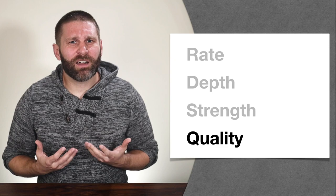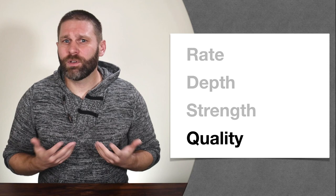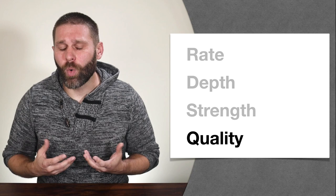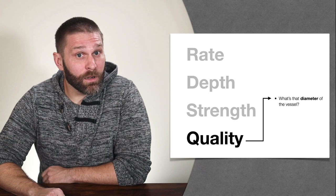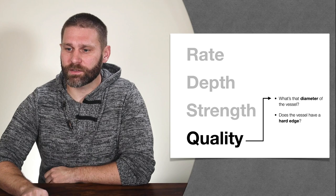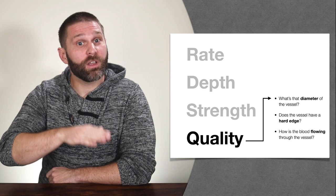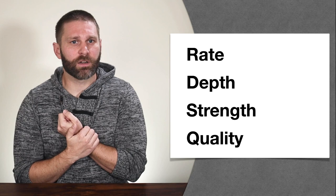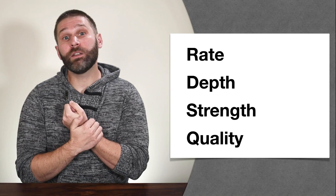If you're just starting out, you probably don't know the 28 pulse images and they can be really confusing. So instead, we can start by asking some additional simple questions about quality: What's the diameter of the vessel — very large or very narrow? Does the vessel have a hard, distinct edge? And how is the blood flowing through the vessel — smoothly or roughly? This gives us a way to go through the list systematically.